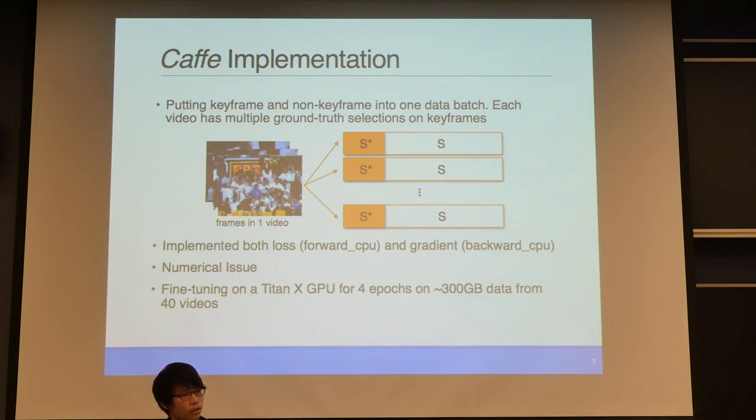Before training you have to prepare your data. The data set we are using, each video contains multiple sets of keyframe selections from different users. So we can extract many data from one video into many different data batches. Each data batch has two parts. One is selected keyframe and another one is not selected. Notice that we don't have data and label pair here. We are doing data pairwise comparison within each data batch.